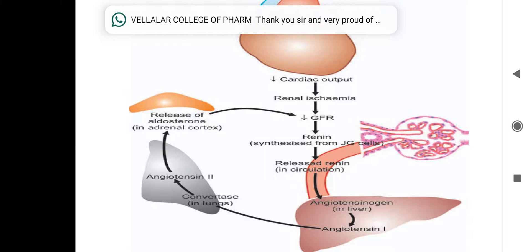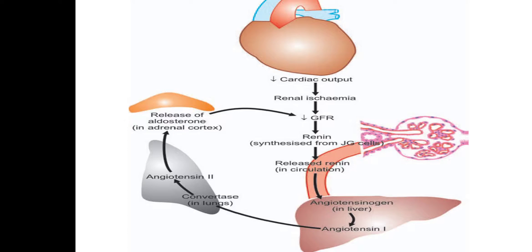When renin is released into blood circulation, it travels to the liver first. The liver acts on angiotensinogen substrate to produce angiotensin 1. In the lungs, there is an enzyme — ACE — that converts angiotensin 1 to angiotensin 2. Angiotensin 2 then acts on the kidneys, stimulating the release of aldosterone. Aldosterone acts as a diuretic hormone.